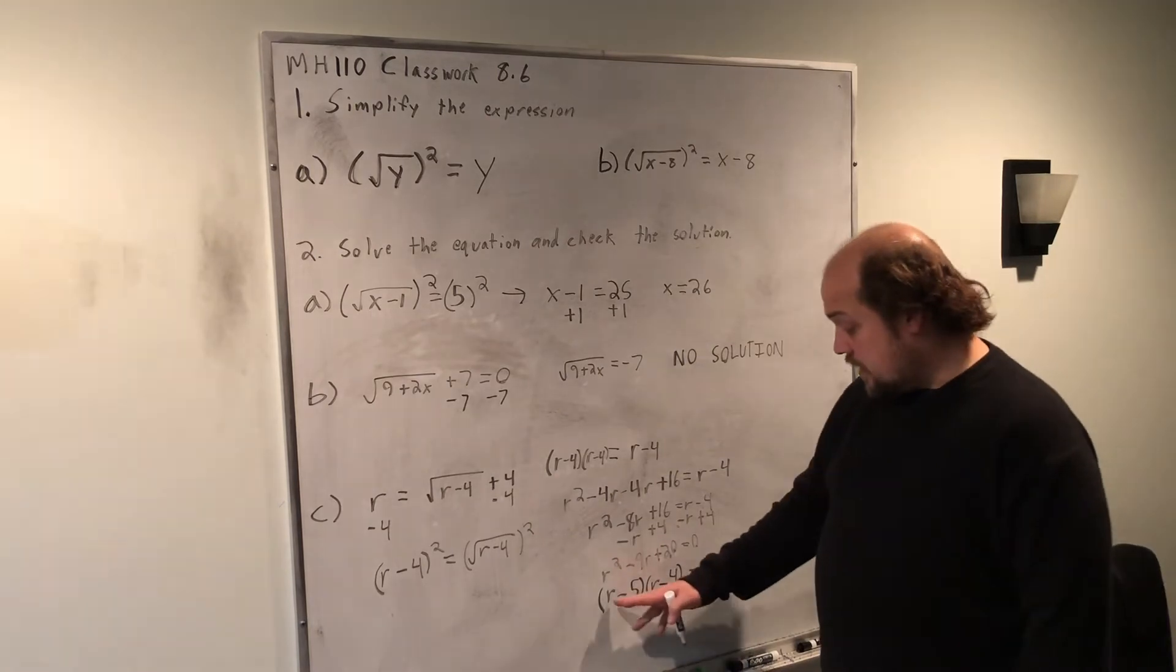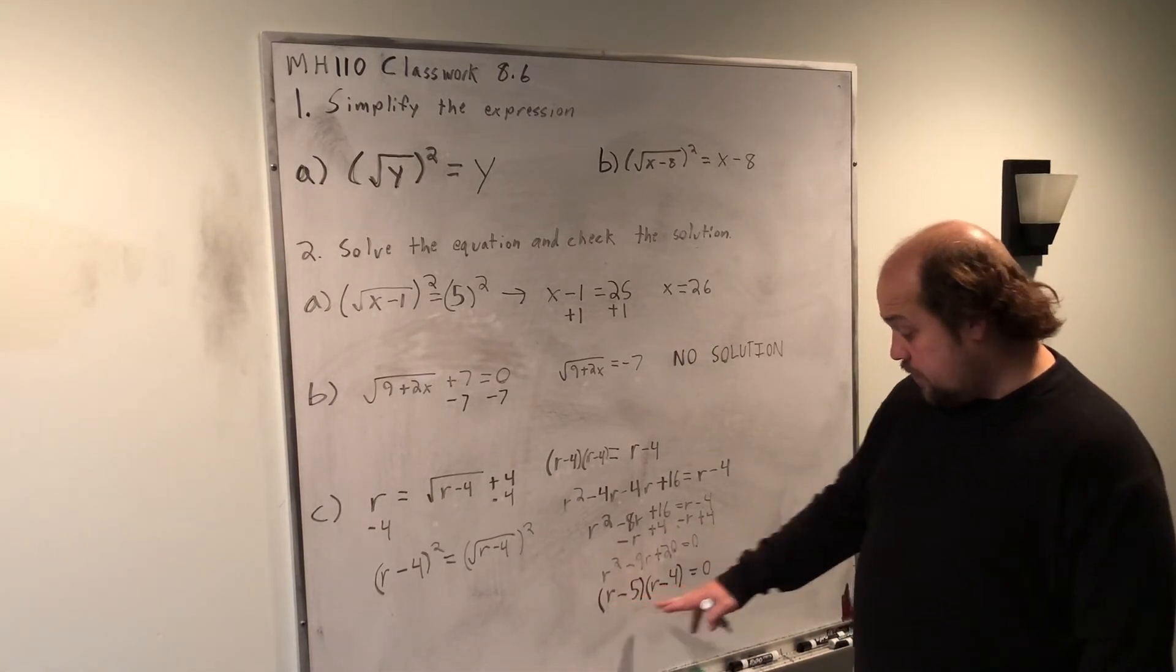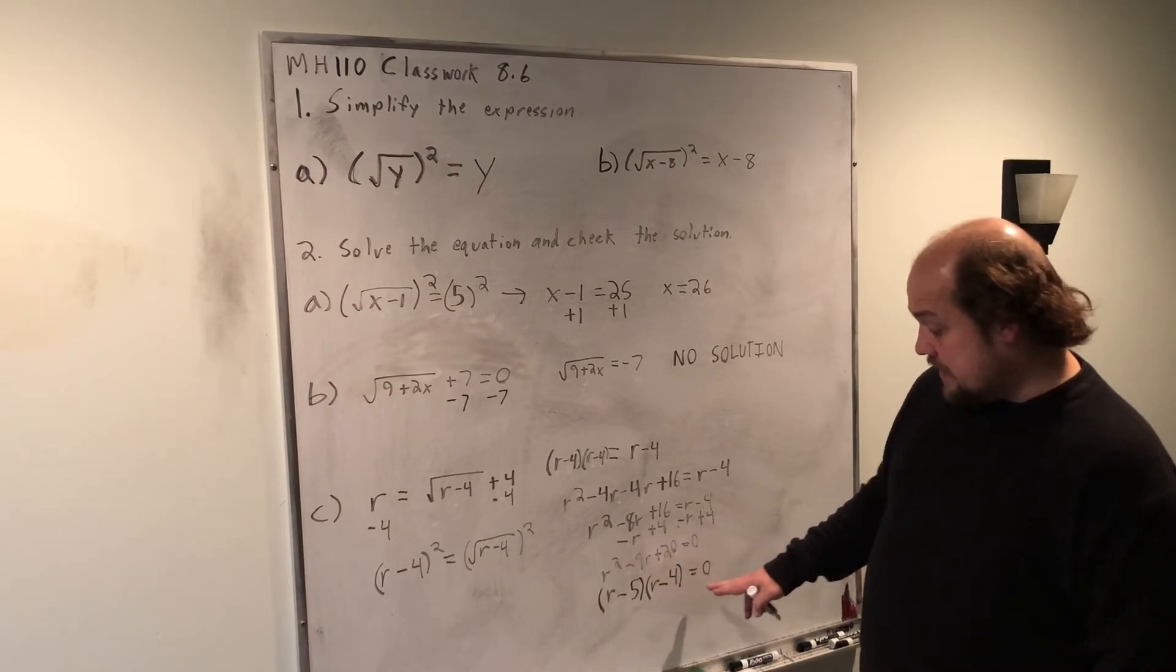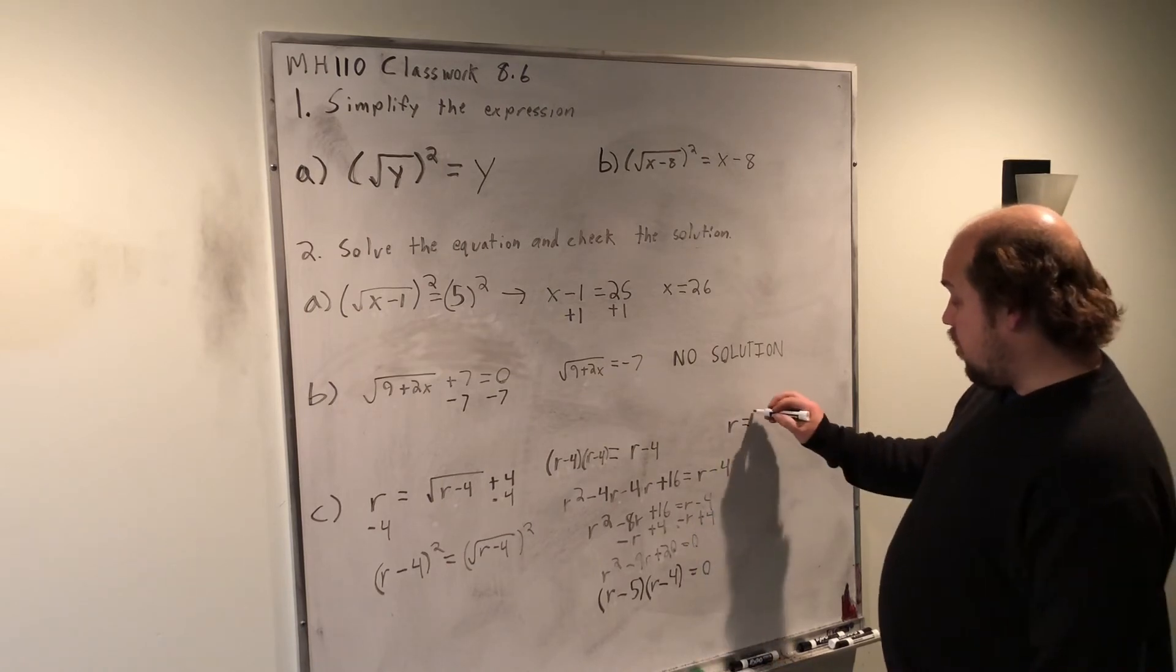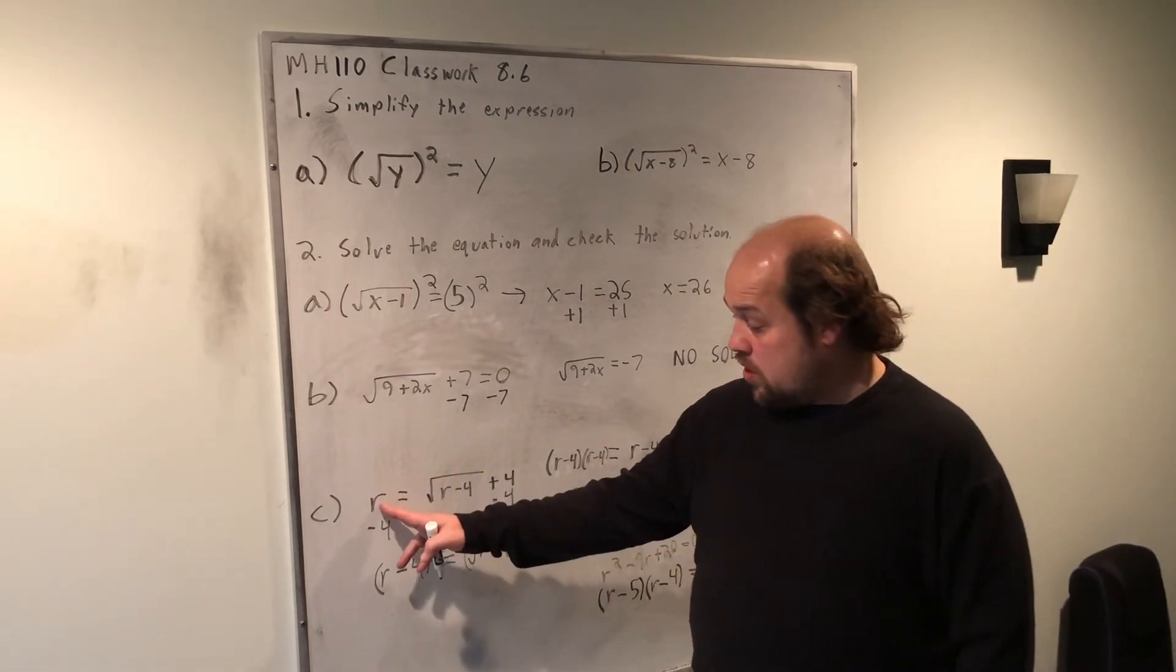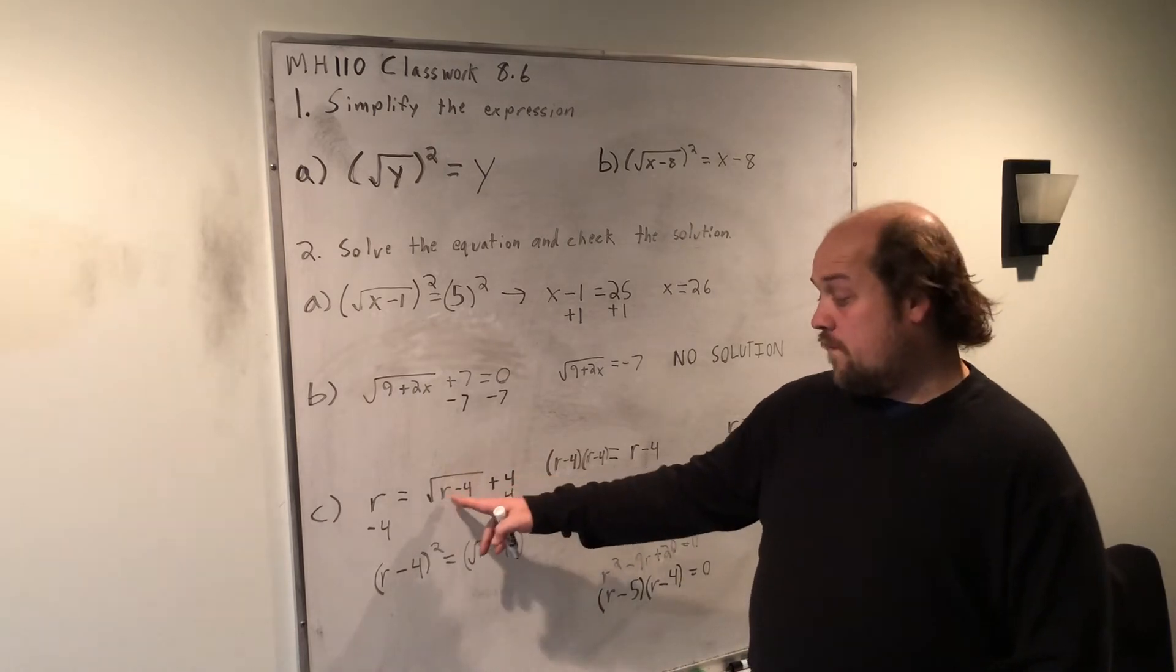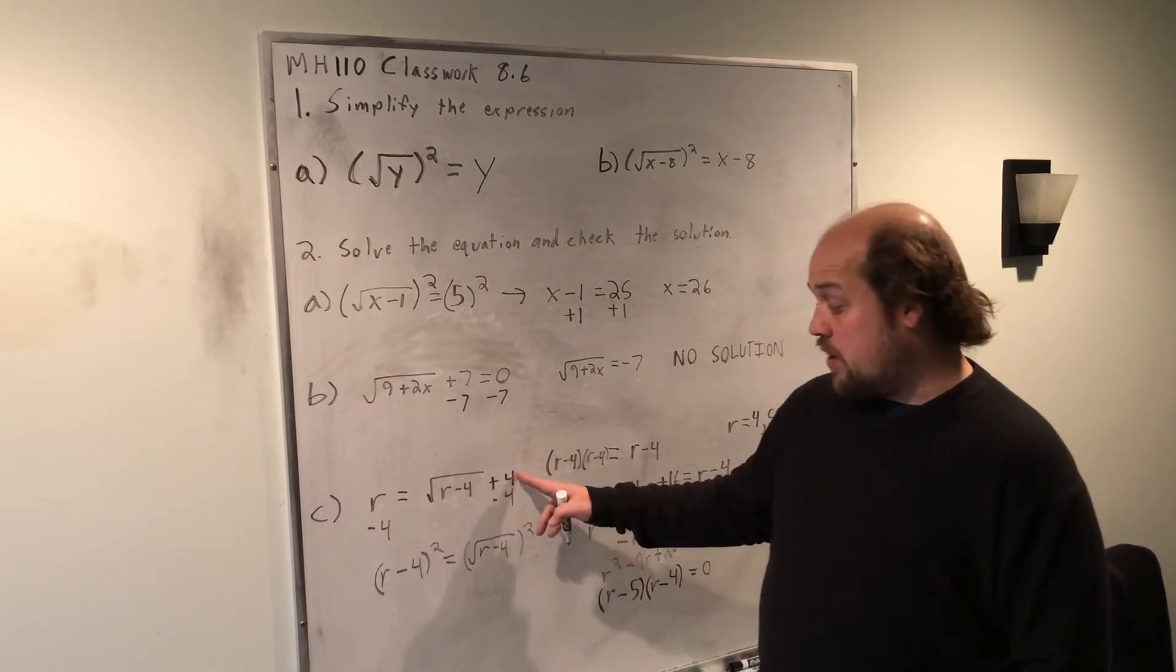That tells me that if I put in 5 as r here, I'll get 0 and make this true. Or if I put in 4 as r here, I'll get 0 and make this true. So, the two solutions I have for r are 4 and 5. If I plug these back into the original, 4 equals 4 minus 4 under the root plus 4. Well, 4 minus 4 is just 0. The root of 0 is 0, so I would get 4 equals 4.